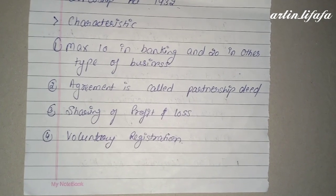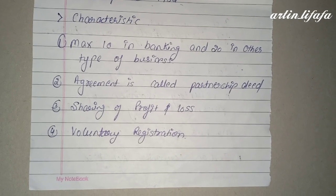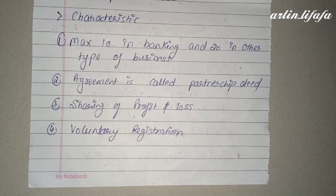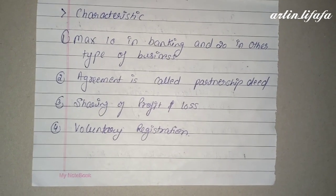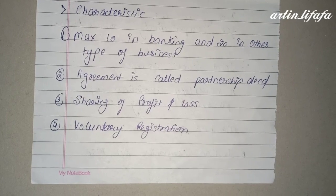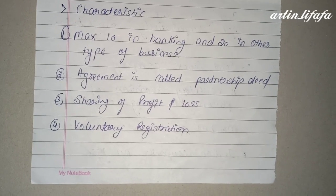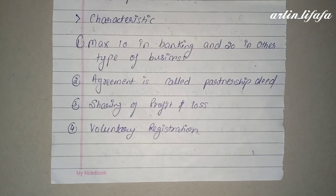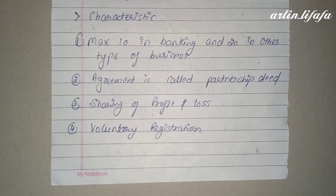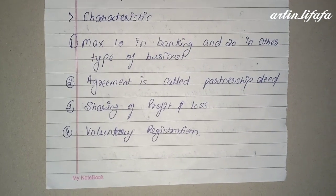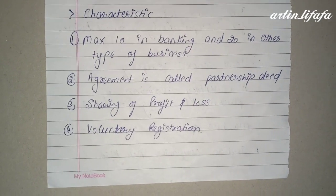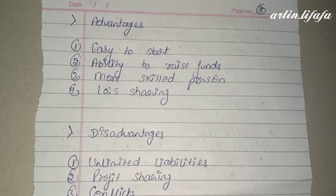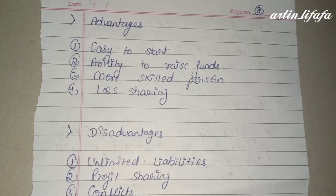Sharing of profit and loss — sole proprietorship में profit share नहीं होता, लेकिन partnership में पूरा profit and loss share होता है। Voluntary registration — partners अगर चाहें तो अपनी firm को register करा सकते हैं और नहीं चाहें तो नहीं भी करा सकते।